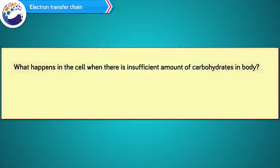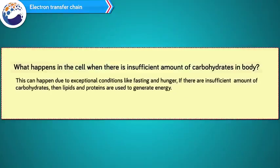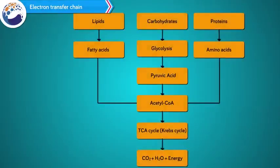What happens in the cell when there is an insufficient amount of carbohydrates in the body? This can happen due to exceptional conditions like fasting and hunger. If there is insufficient carbohydrate, then lipids and proteins are used to generate energy. Lipids are converted into fatty acids, whereas proteins are converted into amino acids. Fatty acids and amino acids are converted into acetyl CoA, and energy is obtained through complete oxidation of acetyl CoA by the TCA cycle and electron transfer chain in the mitochondria.